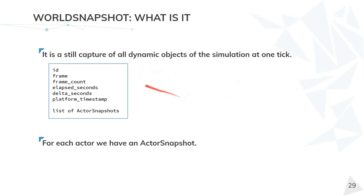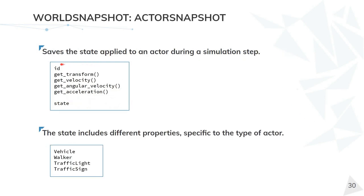Now we are going to see the world snapshot. The world snapshot is like a still capture of the scene, of the current frame. It has some properties like the ID of the frame, the frame count, and also some times. The elapsed time is the time from the start of the simulation, the delta seconds is the time from the last frame, and the platform timestamp is the time from the operating system. For all actors in the scene we also have an actor snapshot.